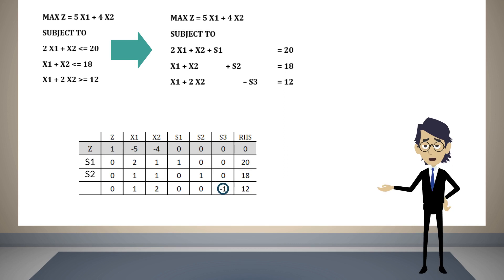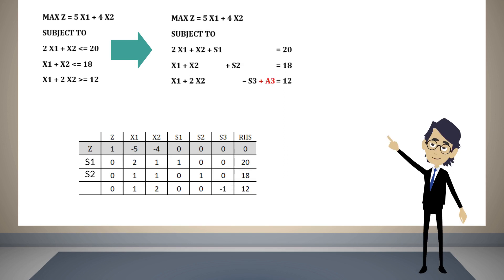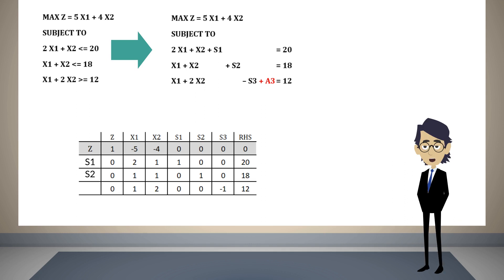This problem cannot be ignored since the simplex method cannot be executed until we have a basic variable in each row. This is the reason why we need artificial variables. To have a basic variable in that row, we add an artificial variable to the third constraint, giving us a variable with coefficient 1 in the third row and 0 in all others. However, if we only add the variable, it is possible that in the final solution a3 has a positive value, which means the third constraint won't be satisfied.